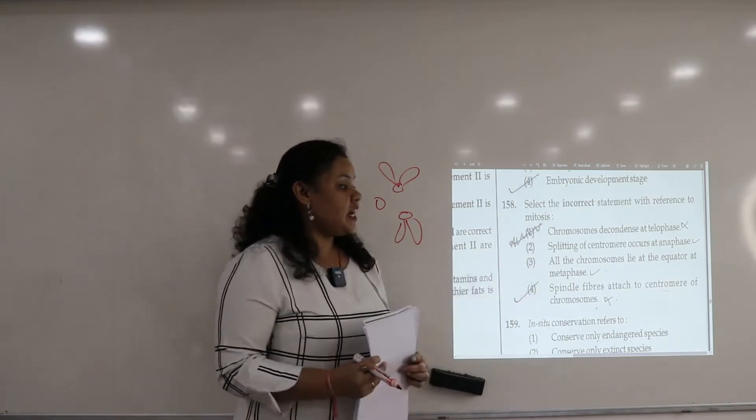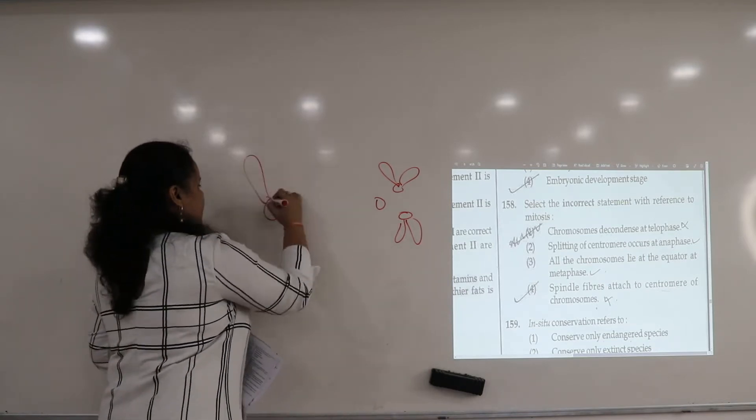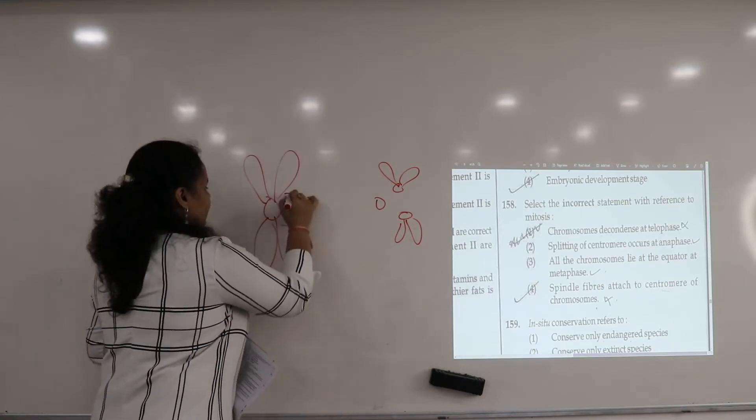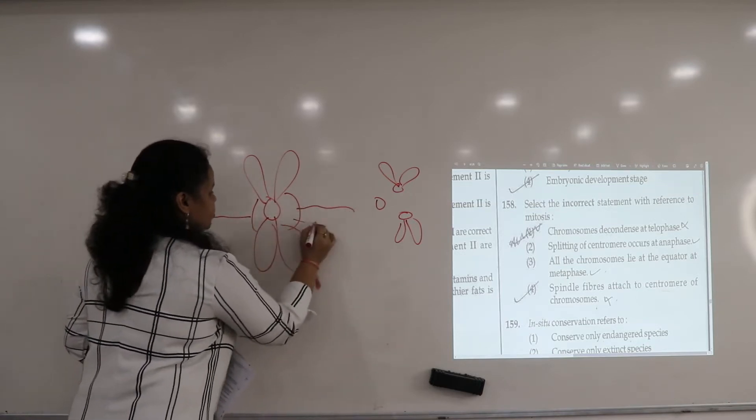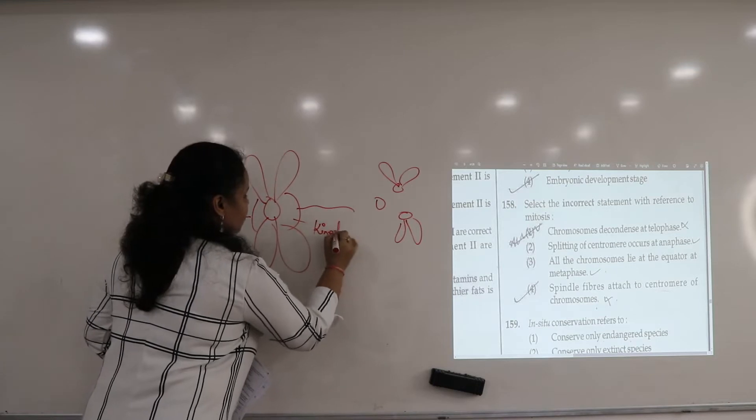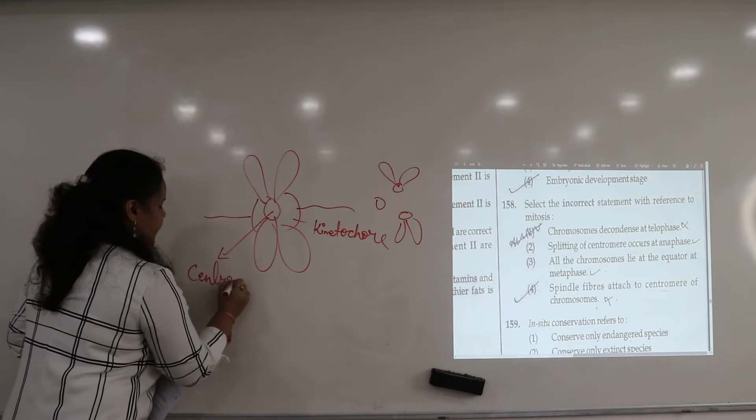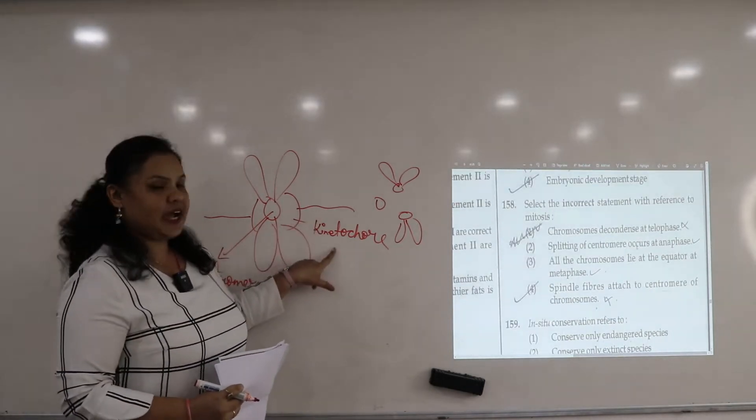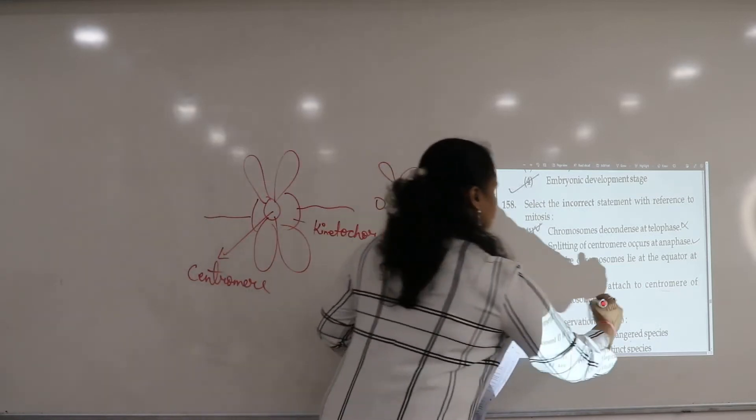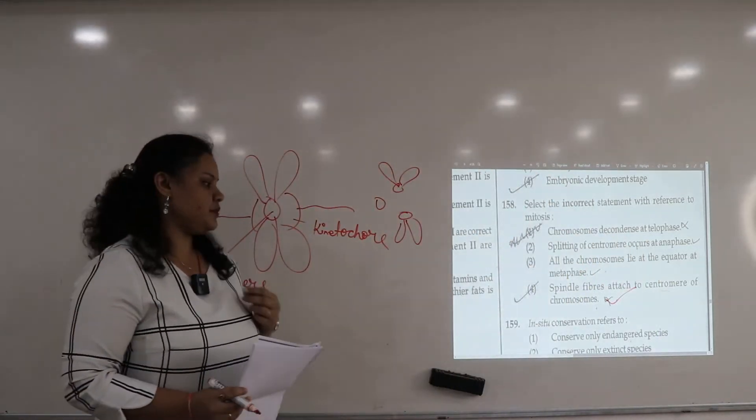Last statement: the spindle fibers attach to centromere of chromosome. What do we learn? This is a chromosome, and whatever spindle fibers are there, they attach to this structure which is known as kinetochore. And this is centromere. So who attach to spindle fibers? Kinetochore. So the right answer for this question will be option 4.